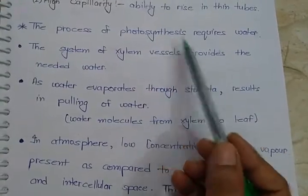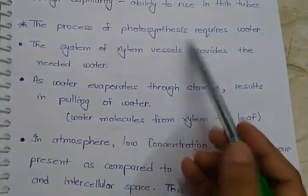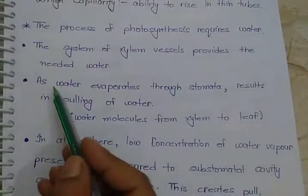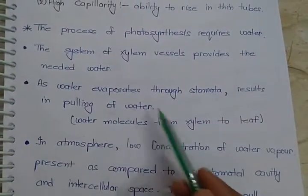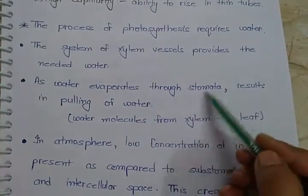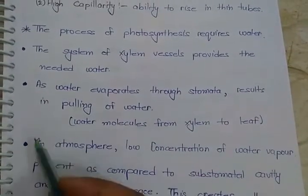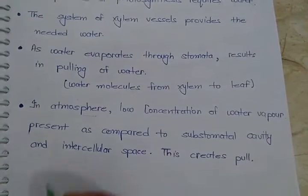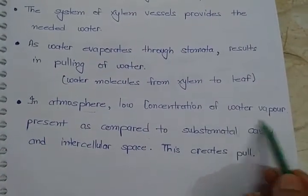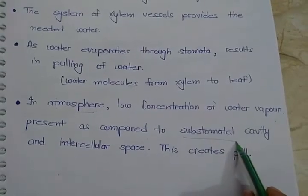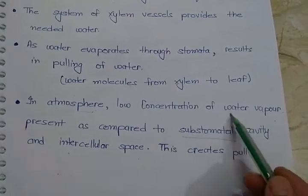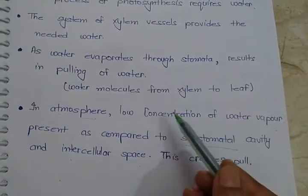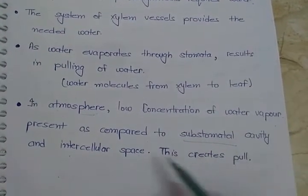The process of photosynthesis requires water, which is provided by xylem vessels. As water evaporates through the stomata, it results in pulling of water from the xylem towards the leaf. This pulling force is generated because the atmosphere has low concentration of water vapor, while the sub-stomatal cavity and intercellular spaces have more water molecules — flow occurs from high concentration to low concentration, and this difference creates the pull.